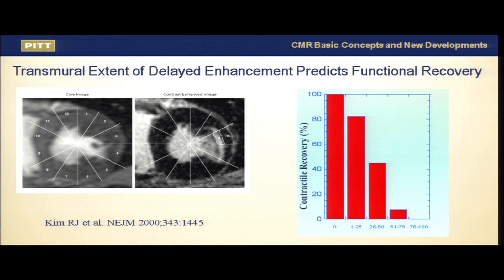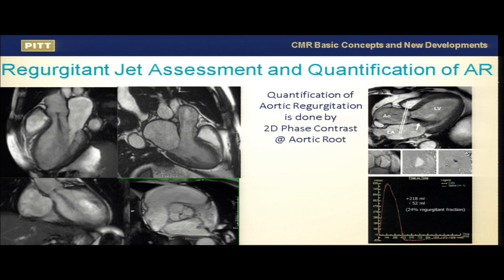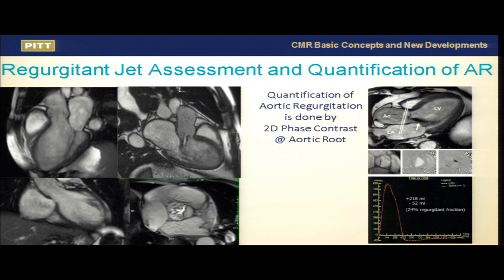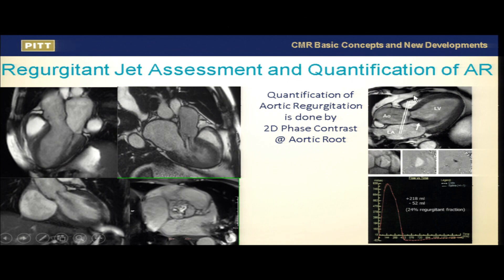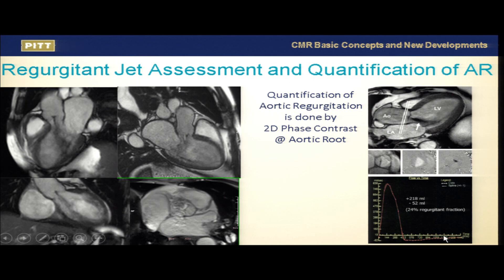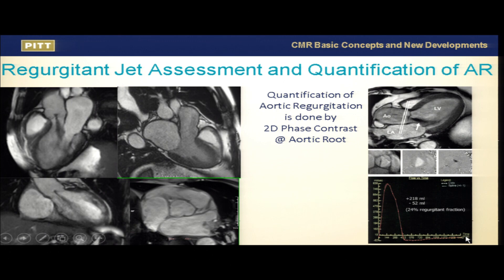Valvular disease is a hot topic, particularly as we try to develop better thresholds for cardiac MR use — especially for aortic regurgitation, which we struggle with on echocardiography. It's important to perform proper image acquisition at the correct slice plane at the aortic root, calculating flow upward in systole and then backward flow. The area under the curve corresponds to the regurgitation volume and regurgitation fraction, which we can calculate precisely.